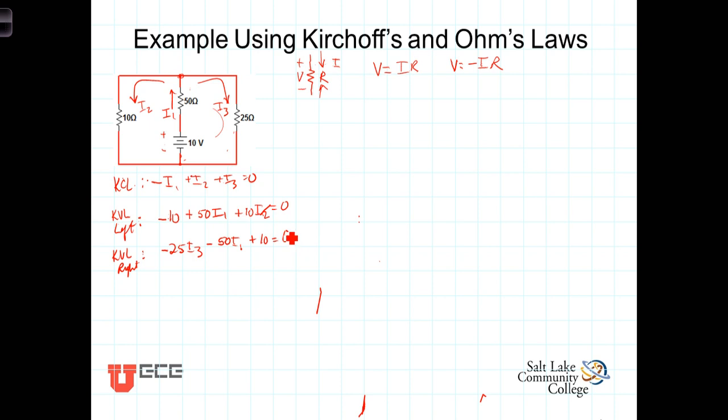Now, let's rewrite these equations with the variables on the left-hand side and the constants on the right-hand side. When we do that, we'll have negative I1 plus I2 plus I3 equals zero. The second equation is 50 I1 plus 10 I2. There are no I3 terms there. So we bring this minus 10 over to the other side as a positive 10. And finally, the third equation has a negative 50 I1. There are no I2 terms. Minus 25 I3 equals. Now I have a positive 10 here which I'm going to take to the other side of the equation as a negative 10.